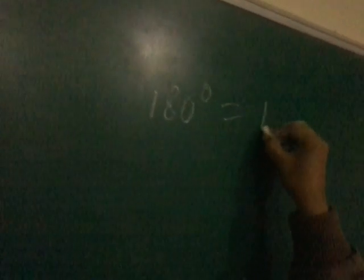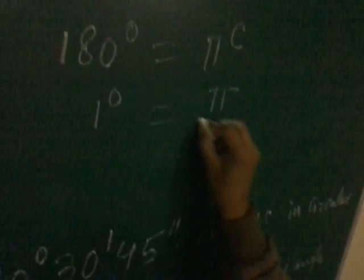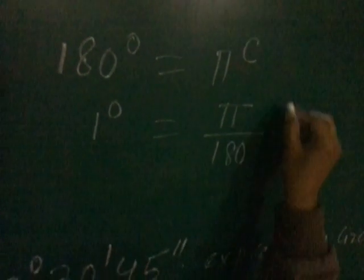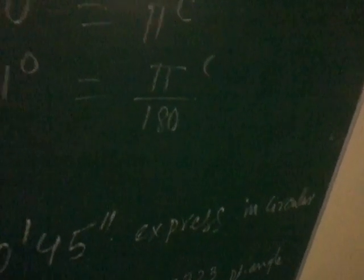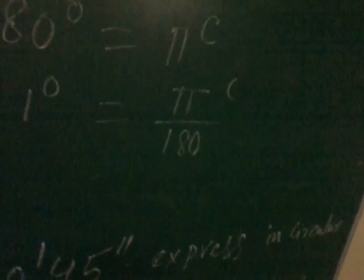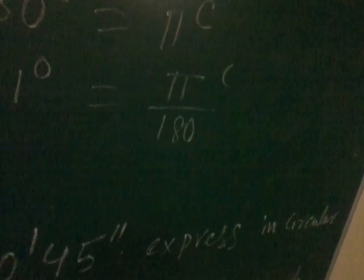We know that 180 degree is equal to pi radian. So by the unitary method, 1 degree is equal to pi by 180 radian. Now, 19323 divided by 21600 right angle — applying this conversion to express the angle in circular measure.